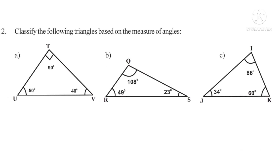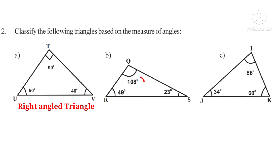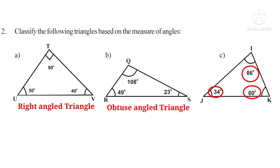Second problem: classify the following triangles based on the measure of angles. In the first figure, triangle TUV has one angle of 90° — one right angle — so it is a right angled triangle. In the second figure, triangle QRS has angle Q = 108°, which is greater than 90° — one obtuse angle — so it is an obtuse angled triangle. In the third figure, triangle IJK has all angles less than 90° — all are acute — so it is an acute angled triangle.